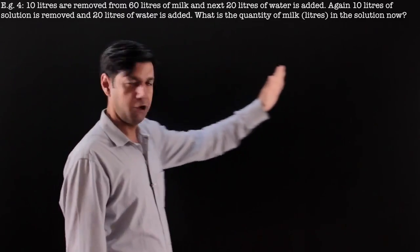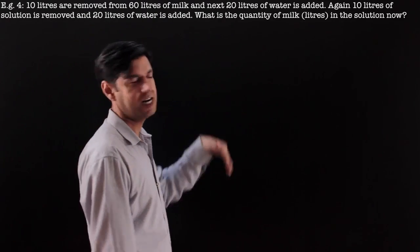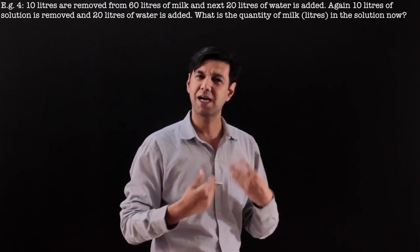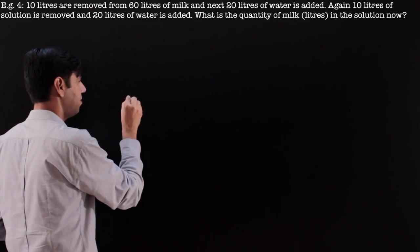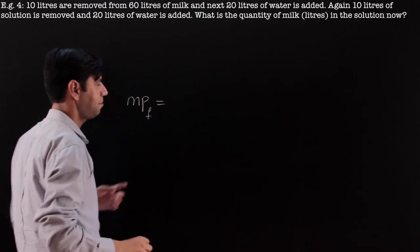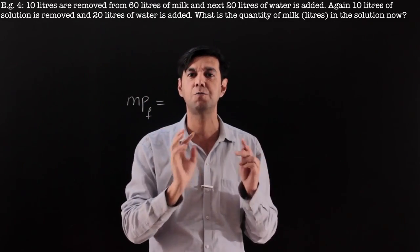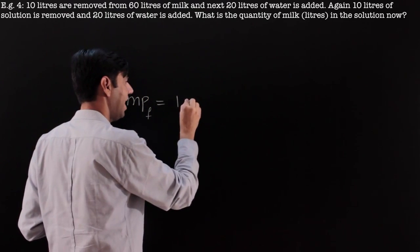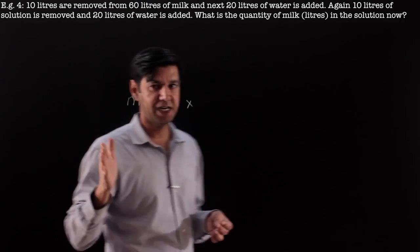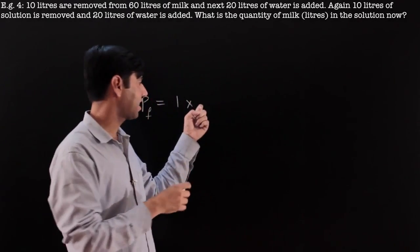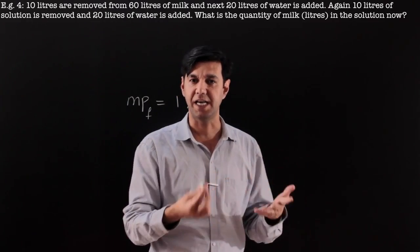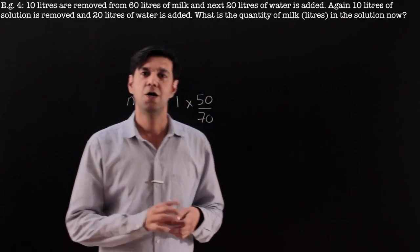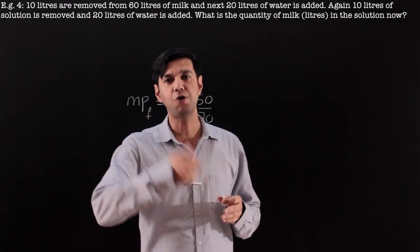This question is different — I'm removing 10 liters but adding 20 liters. Let's try not to write the volumes first. The proportion of milk finally equals the proportion initially times factors. At start all 60 liters was just milk, so the initial proportion is 1. I'm removing 10 from 60 so it becomes 50, then adding 20 so it becomes 70. The factor here is 50/70 — initial volume before adding over volume after adding.